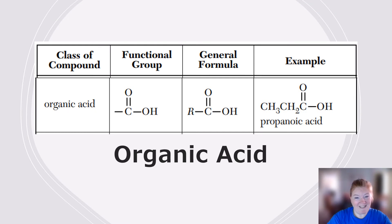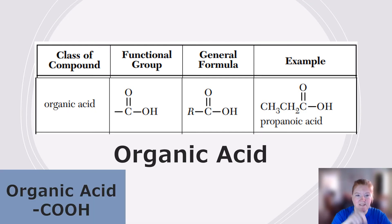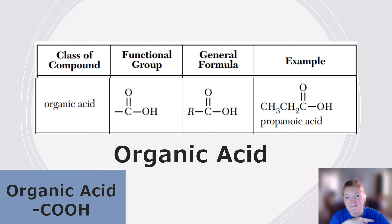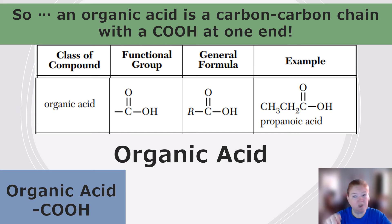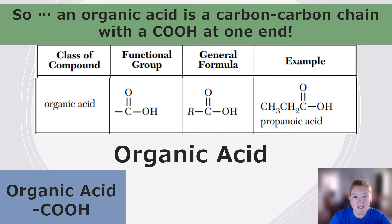Organic acids are next. The functional group is C double bond O, with the carbon also bonded to an OH — giving COOH at one end. An organic acid is a carbon chain with a COOH at one end. No address needed because it's always on an end carbon.